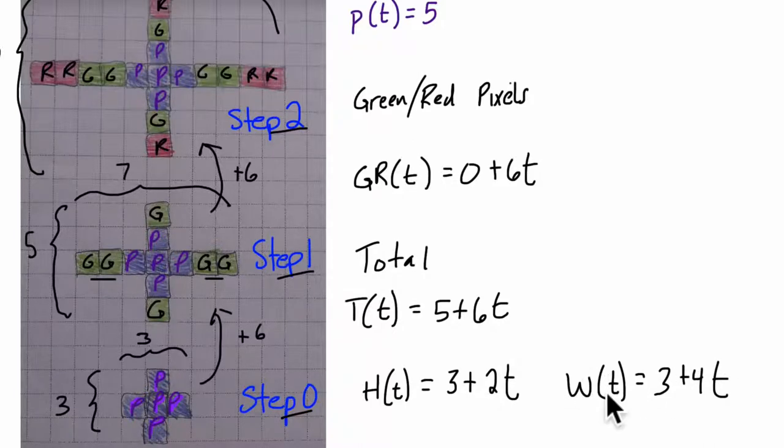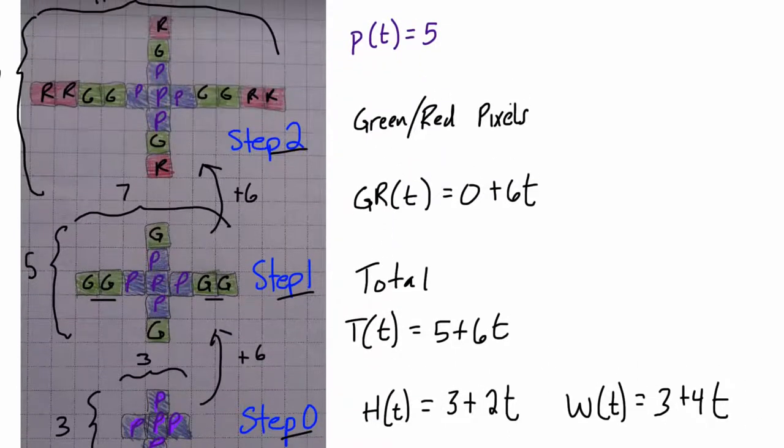Now, one thing in all of this work, we look at where would this pattern be at step 100. So I would like to know how many purple pixels are there, how many green and red, total height and width. Where is this thing at at step 100? So to figure that out, I simply need to plug in 100 for T. So we've got a little arrow right here that the purple pixels at step 100, well, that still equals 5. There's nothing to change there. The answer is 5.